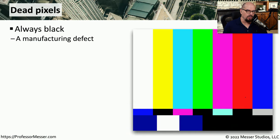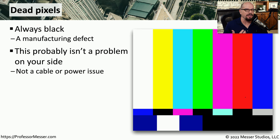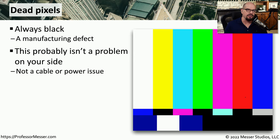Some LCDs have one or more pixels on the display that simply don't have any color on them at all. They are completely black, and they always stay black. We refer to these as dead pixels because they never show any other type of color. This is not something you can resolve on the user side, and there's no way to go into the monitor and enable that one pixel. This is not a cable issue, and you can't provide any other type of power source. That pixel will stay black, and there's nothing you can change with the monitor or the cabling that will resolve that.